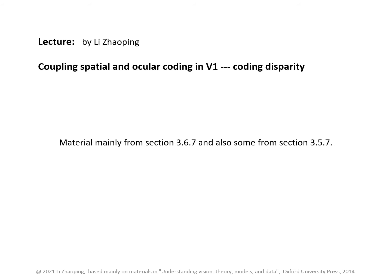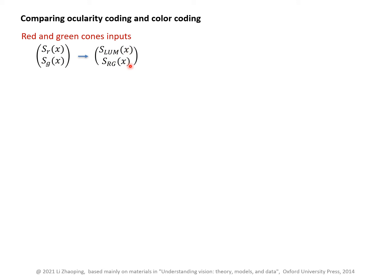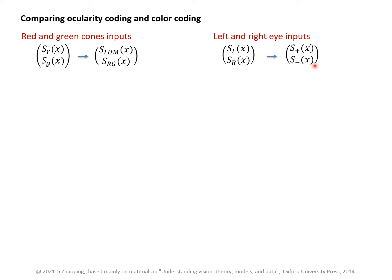Coupling spatial and ocular coding in V1. Let's first get some intuition by comparing the ocularity coding and color coding using only two cone types. In color coding we have red and green cone inputs, and they are decorrelated into luminance and chromatic inputs. In ocular coding we have analogously left eye input S_L and right eye input S_R, and they are also decorrelated into summation and difference images.